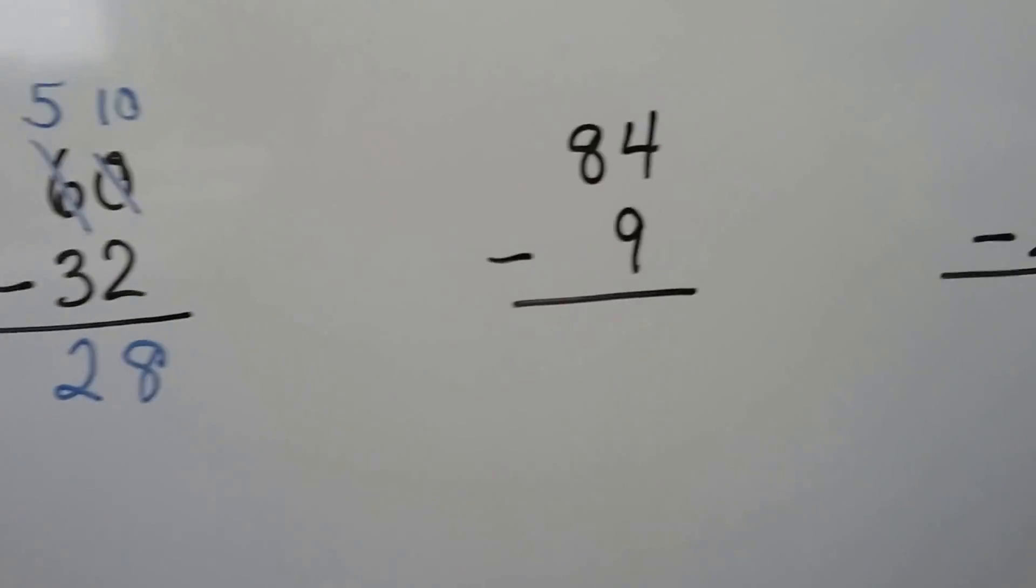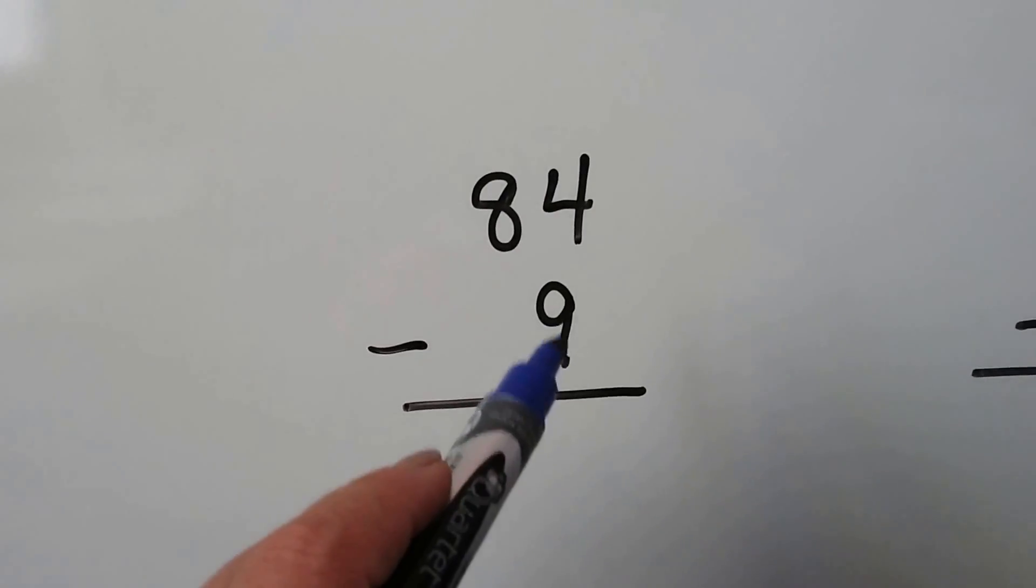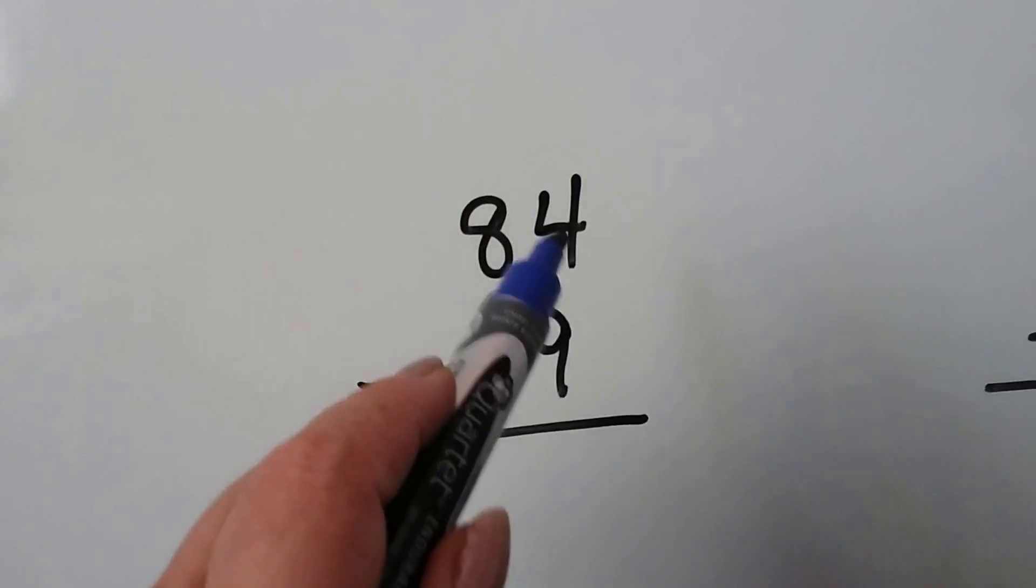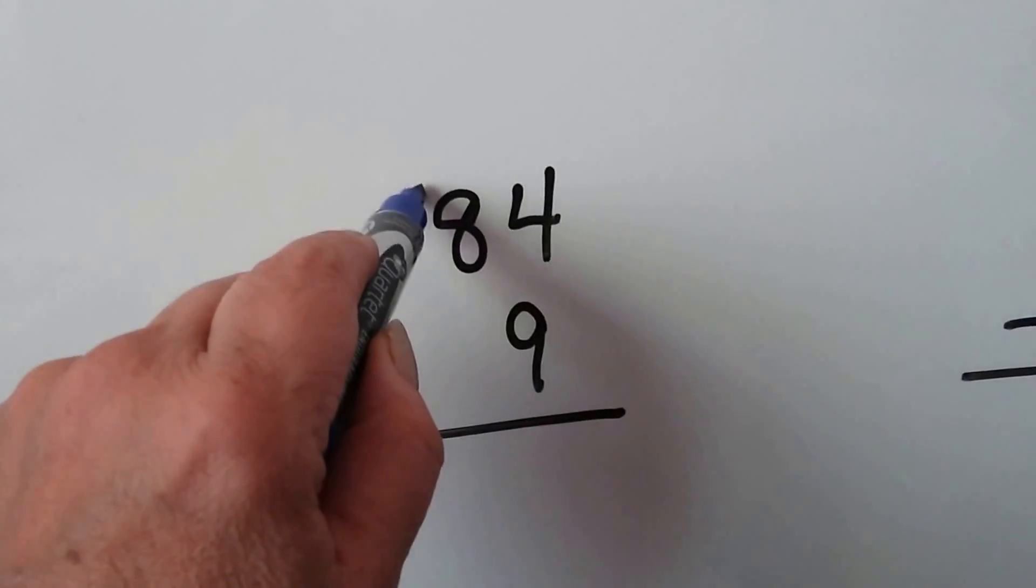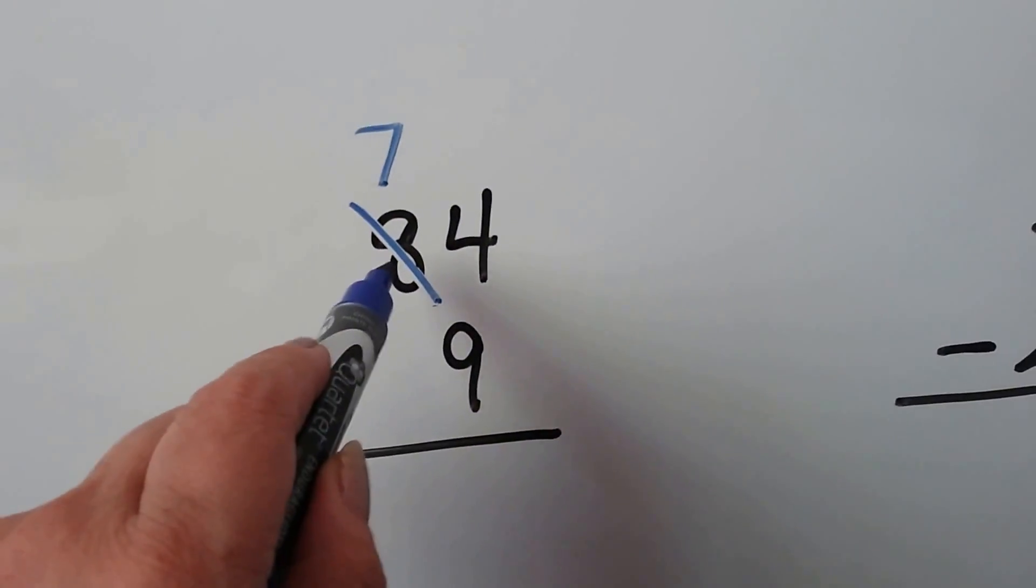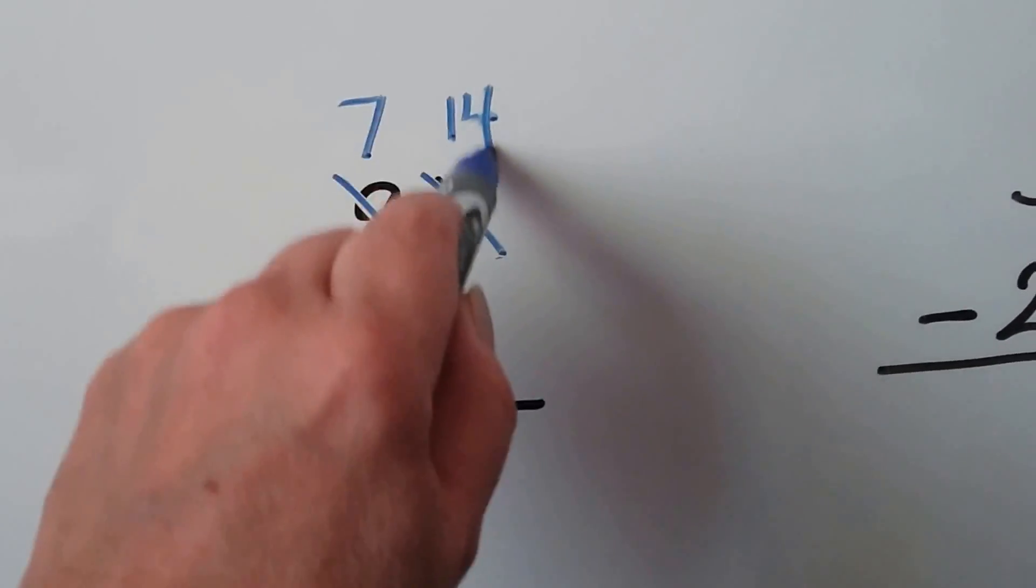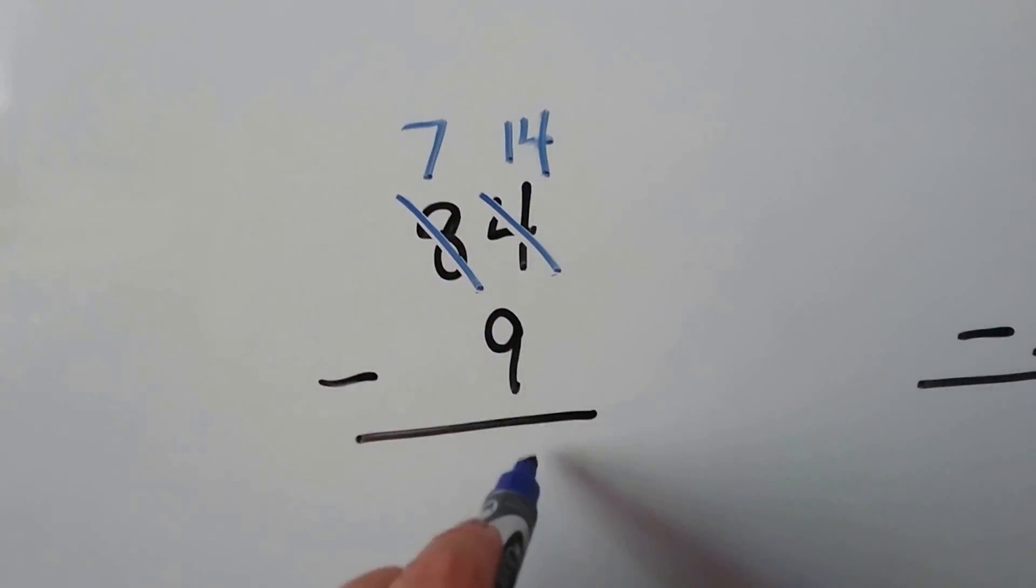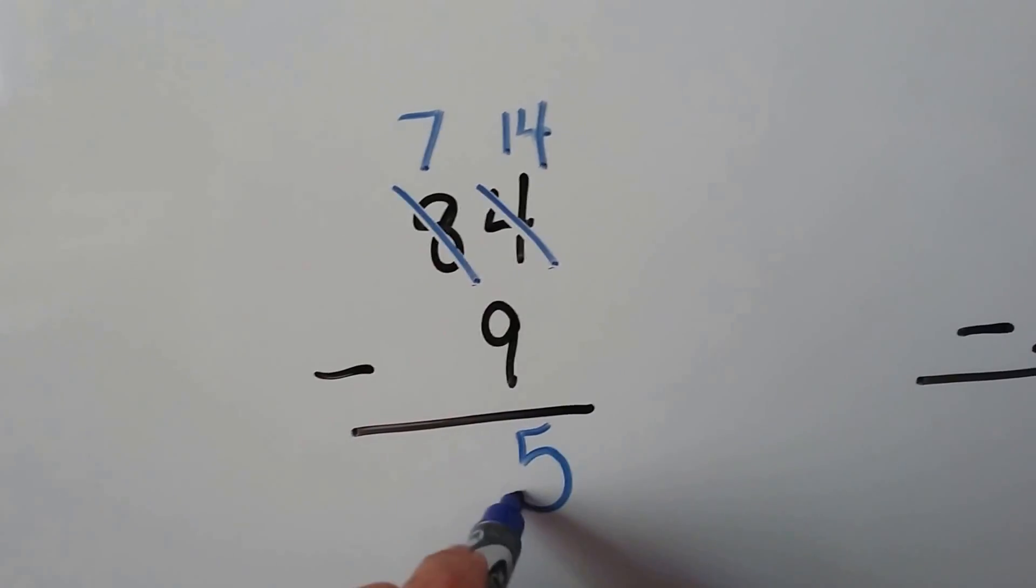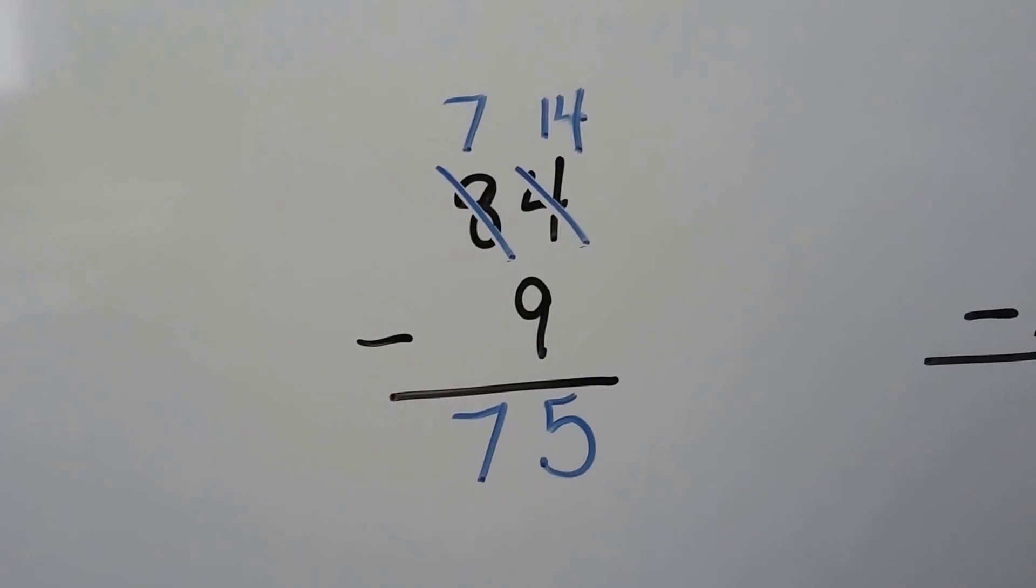Let's try it again. We have 84 minus 9. We look at the 9 and see that it's larger than the 4. So we need to regroup. This becomes a 7. We give that 10 to the ones place. So instead of 4, we now have 14. 14 minus 9 is 5. And we bring the 7 down. We get 75.